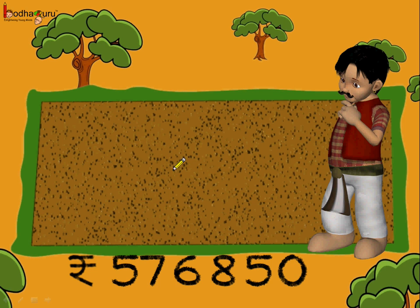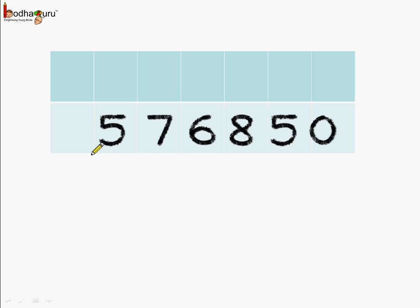Now let's see — this is Maniram, and he bought a huge piece of land for rupees 5,76,850. How do we read this? It's a little confusing — is it 5 lakhs, or 57 lakhs, or 57,000? So let's try to place the number under a place value chart, and then it will be easy to read the number.